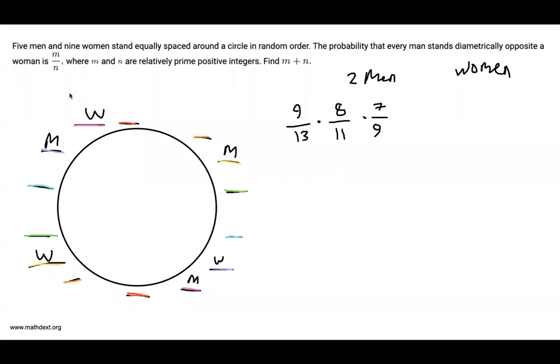So once I've sat down my next woman, I will put a guy down in another seat like this one. What's the probability that this red seat is a woman? Well, it's 6 over 7 because there are six women and seven people left to seat.